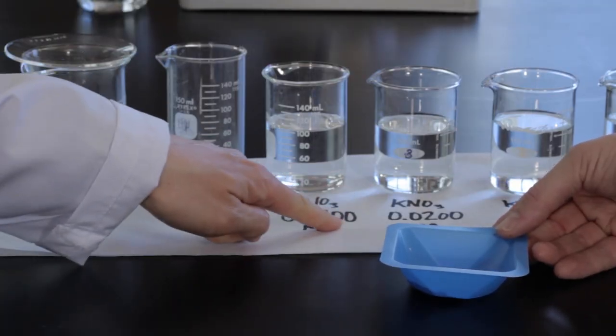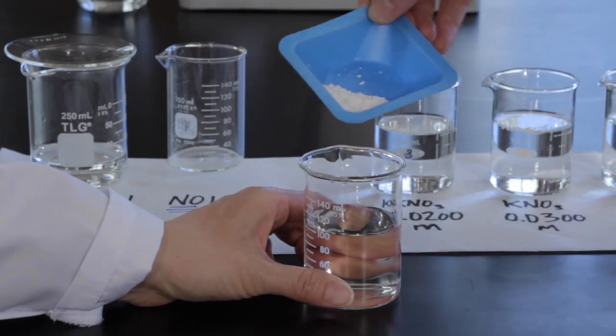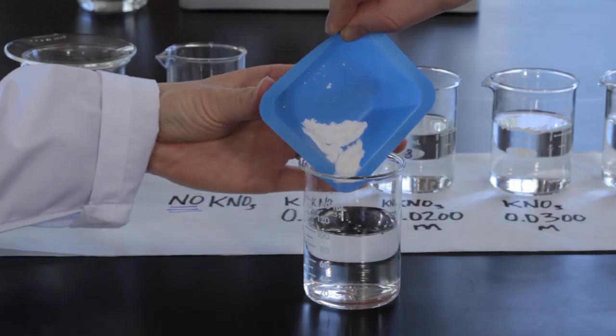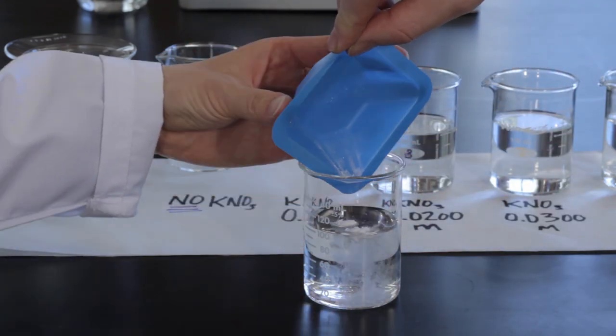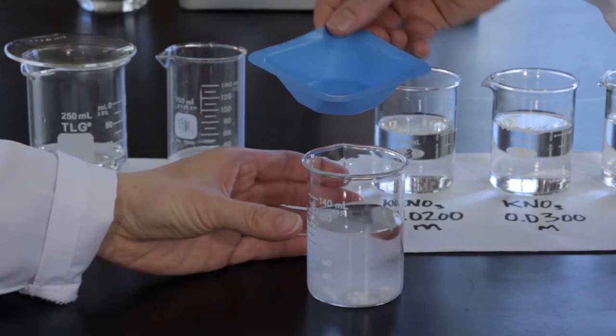Repeat the procedure, except this time approximately 100 milliliters of a potassium nitrate solution will be used as the solvent. Weigh out approximately 1 gram of potassium hydrogen tartrate and transfer the solid into a clean, dry beaker.